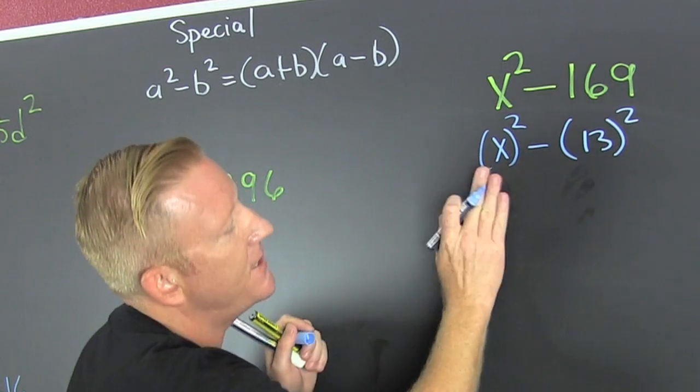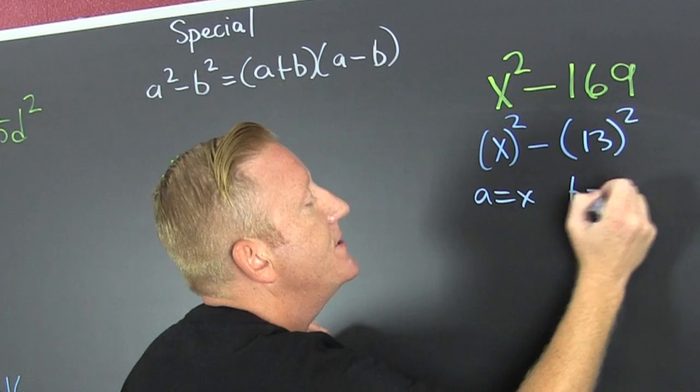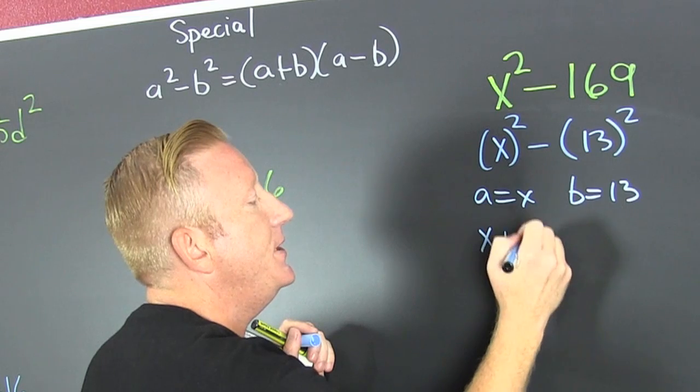Now that I see I have the difference of squares here, my a is x and my b is 13. So when I have the difference of two squares, that's a plus b, a minus b. Box it.